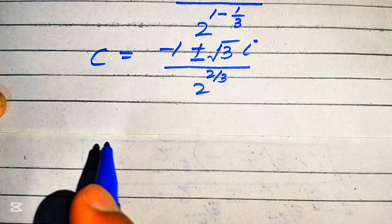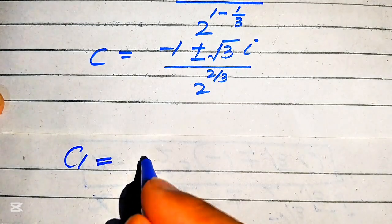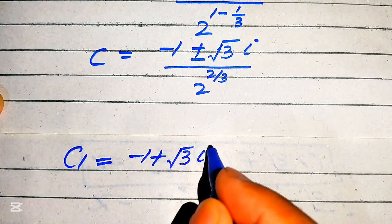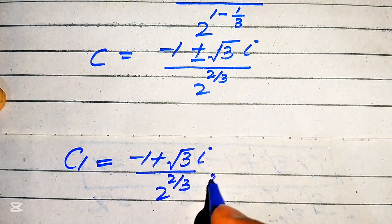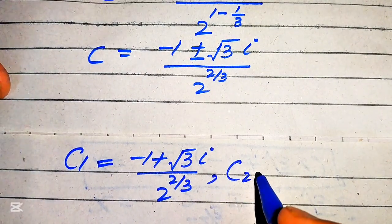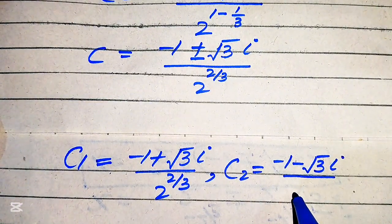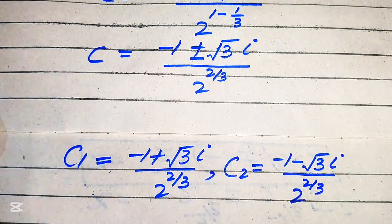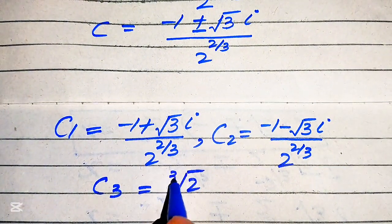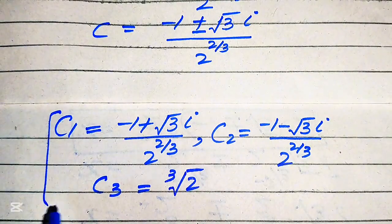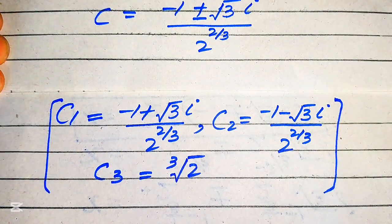Finally, the three roots of the given equation are: c₁ equals cube root of 2; c₂ equals (negative 1 plus square root of 3 times iota) divided by 2 to the power of 2 over 3; and c₃ equals (negative 1 minus square root of 3 times iota) divided by 2 to the power of 2 over 3. These are the final three roots. Thank you for watching — please subscribe for more videos.